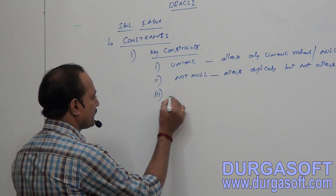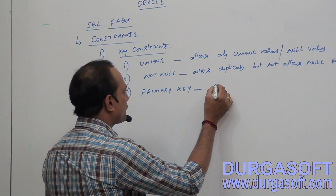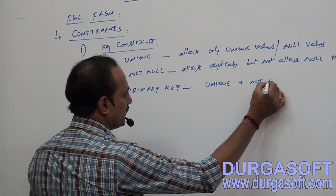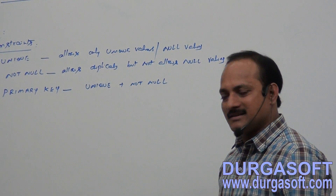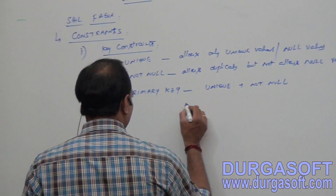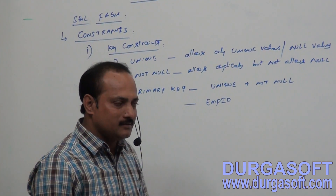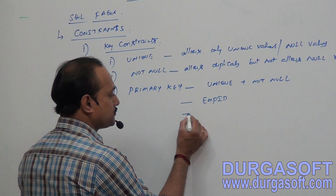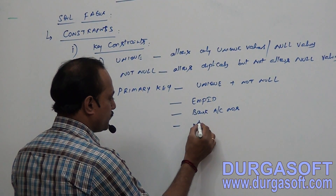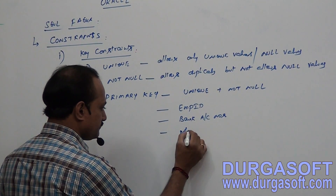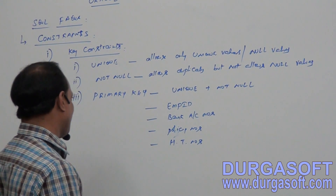The third one is primary key. What is a primary key? Simply, primary key is the combination of unique plus not null. So primary key should not allow duplicates and it should not allow null values. Generally, primary keys are defined on columns like employee ID, since every employee must have an employee ID and each employee ID should be different. You can also consider bank account numbers, policy numbers, and certificate numbers as primary key columns.